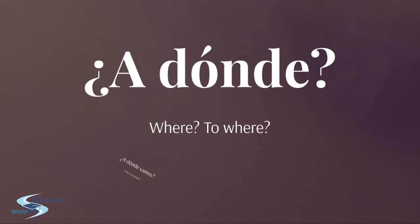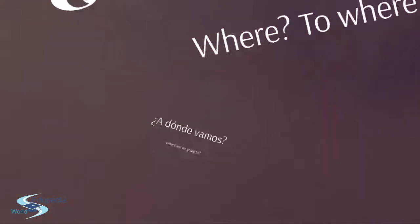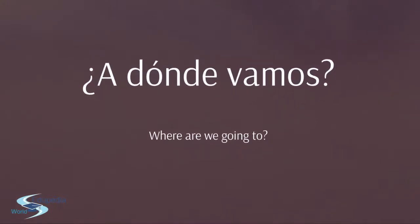'¿A dónde?' — Where to, or to where. Again, formed by two different words: a preposition and an interrogative pronoun. For example, '¿A dónde vamos?' — Where are we going? 'Vamos' comes from the verb 'ir' — to go. It's irregular and we'll see it later on.